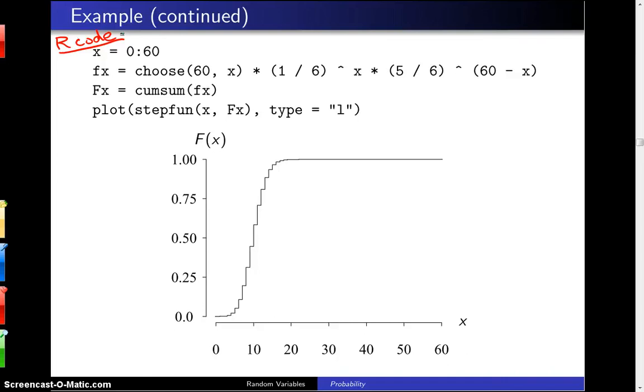And then finally, the plot function uses the step function, and it has arguments x and capital F of x, type equals l, connects the values with a line, and you get the plot that you see below. Now, you can see that most of the activity here is on the x values between the ranges, let's say, 0 to 20, and that's because it is very unlikely out here that you're going to get 20 or more sixes when you roll a fair die 60 times.